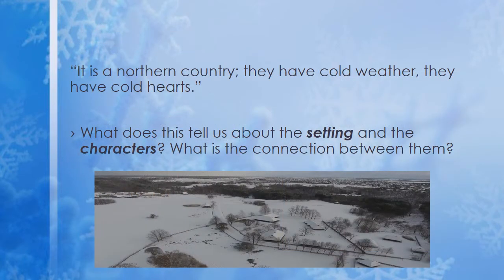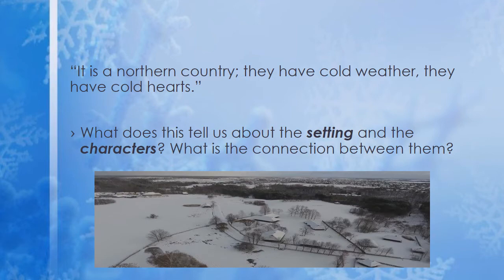'It is a northern country, they have cold weather, they have cold hearts.' Notice there's a bit of repetition here — 'they have cold weather, they have cold hearts.' That repetition always tells us this is something to pay attention to. It tells us literally about the setting, but also about the characters. We know it's cold, so they literally have cold weather — ice, snow. But 'they have cold hearts' is not talking about physical traits but psychological or emotional traits. If their hearts are cold as well, that implies these are people who are not quick to emotion — perhaps harsh and tough — and that their surroundings have made them so.